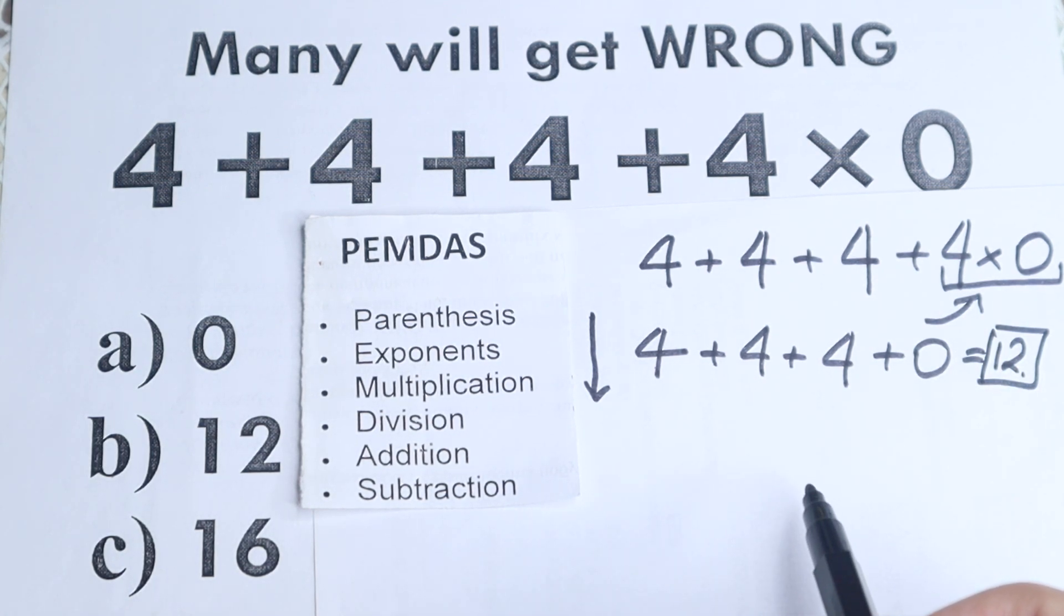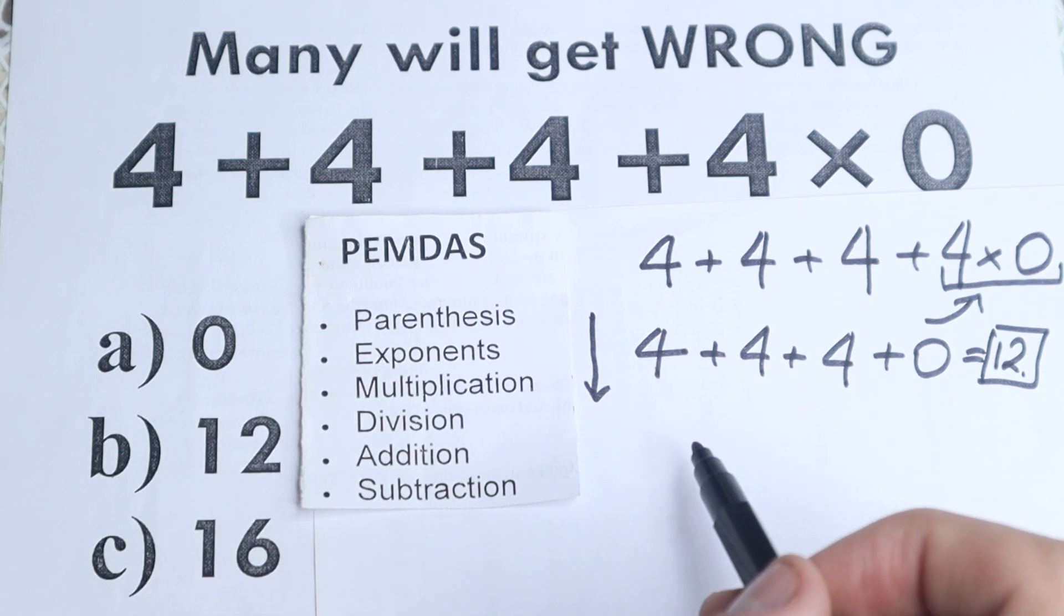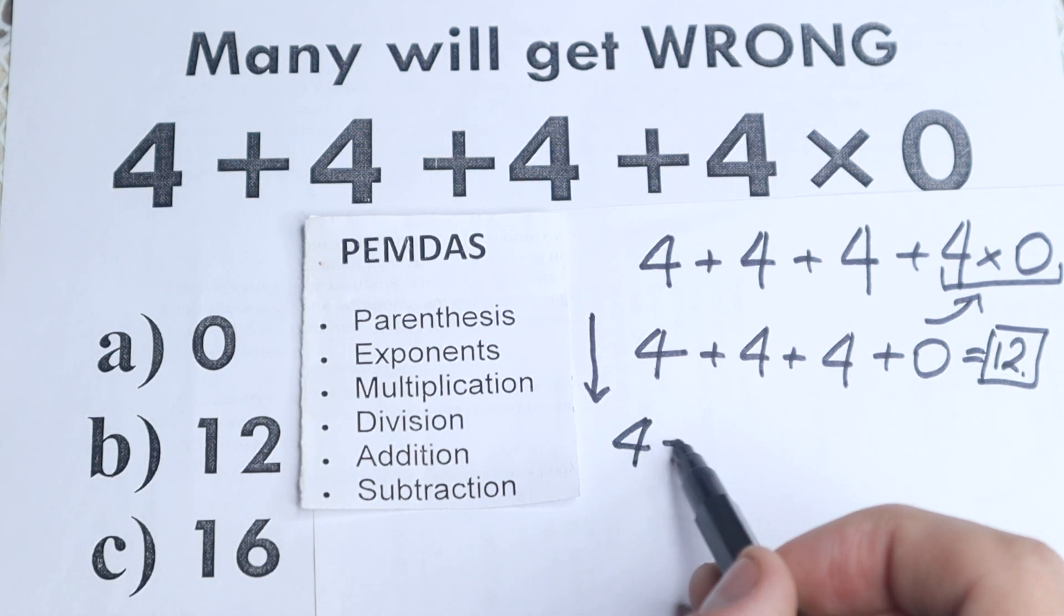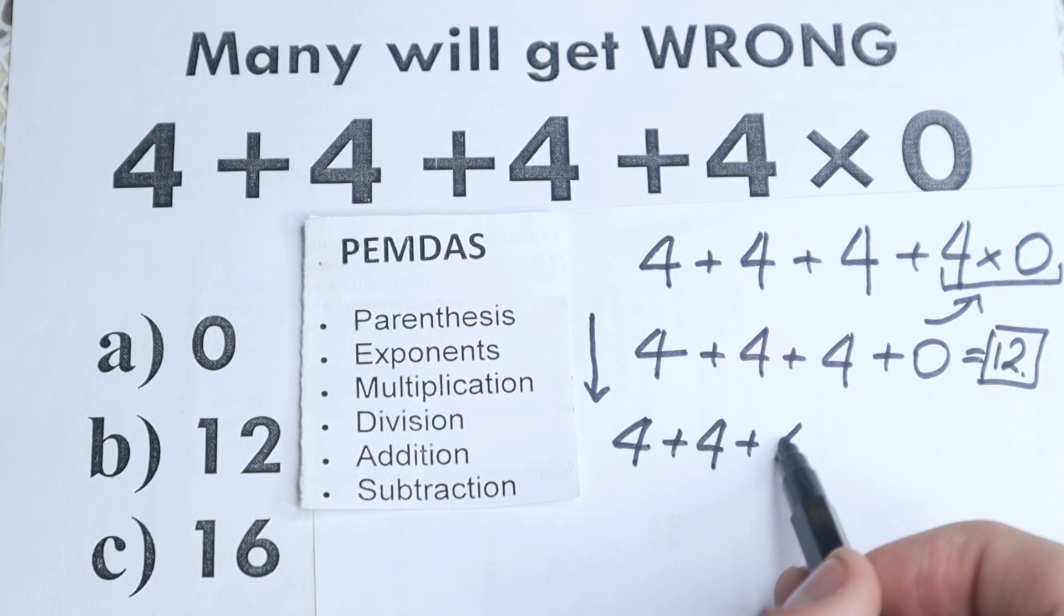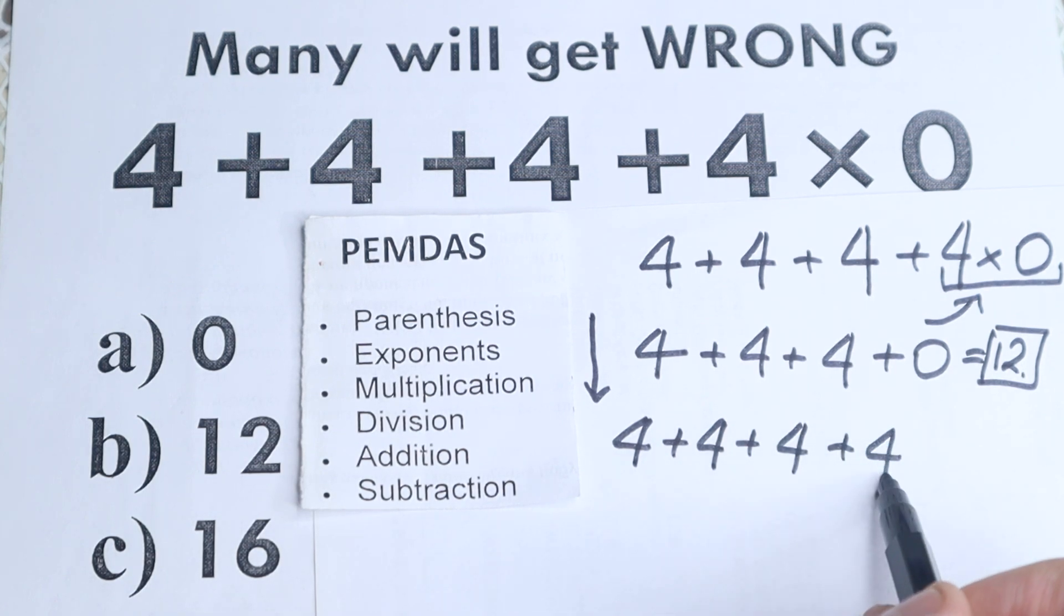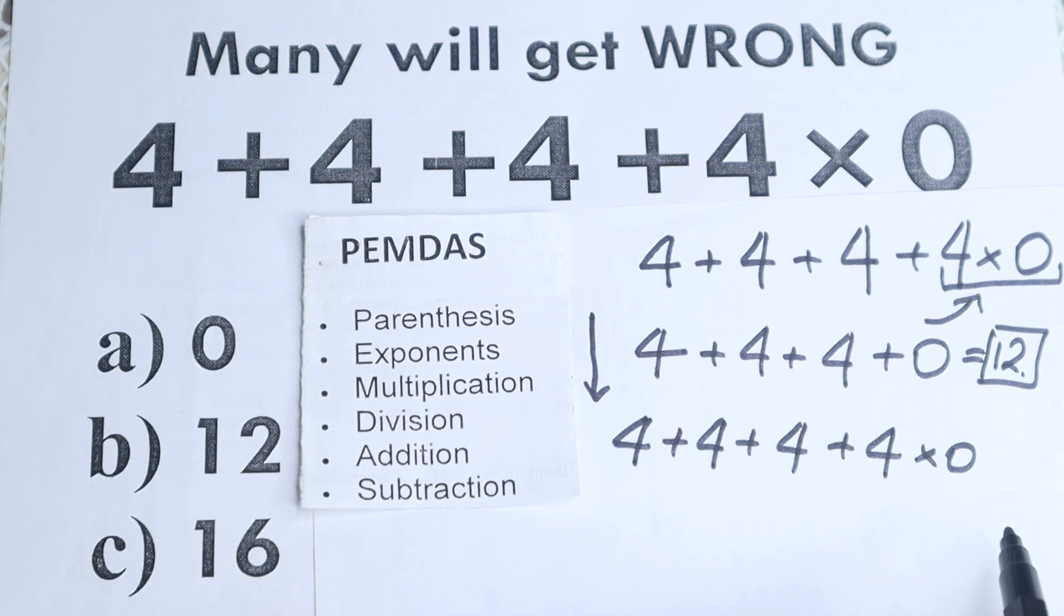And right now I'm going to show you the main common mistake right here, because a lot of students, I read this question right here once more, so 4 plus 4 plus 4 plus 4 times 0. A lot of students learned that if we multiply by 0, the answer is 0.